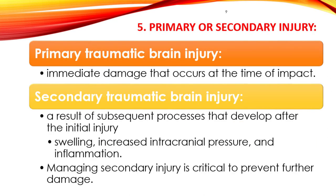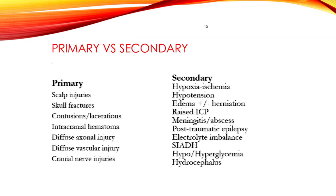Primary head injury includes the initial insult like contusions, skull fractures, and intracranial bleeding. Meanwhile, secondary brain injury involves swelling, increased intracranial pressure, and inflammation. Managing secondary injury is critical to prevent further damage after the initial trauma. This classification of primary and secondary TBI helps with understanding the consequences of head injury, guiding diagnosis, treatment, and management strategies.